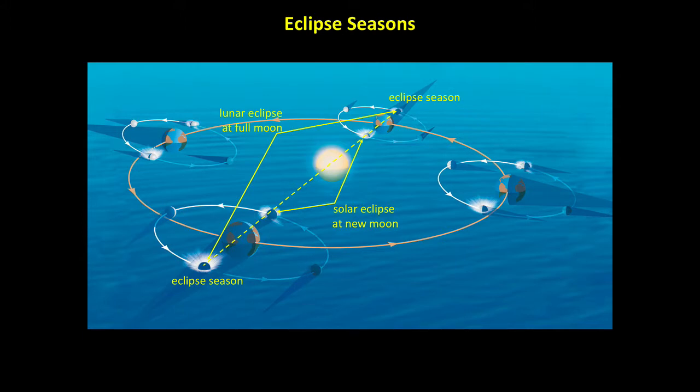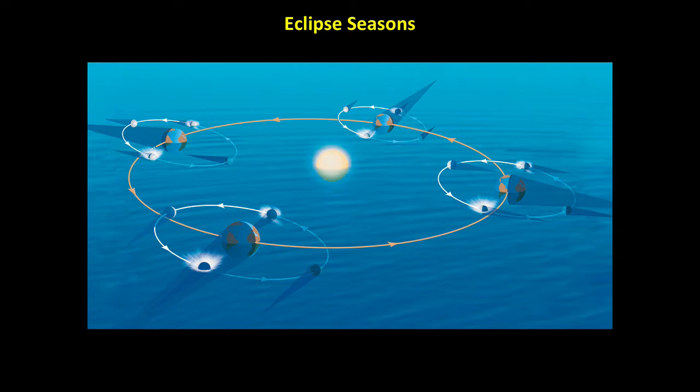If this were the end of the story, the timing of eclipses would be very easy to predict. We'd have eclipse seasons exactly twice a year, with a solar eclipse at new moon and a lunar eclipse at full moon. But there is a further complication to eclipse timing. Although the diagram makes it look like eclipse seasons should come exactly six months apart, they actually come slightly more often, about 173 days apart.